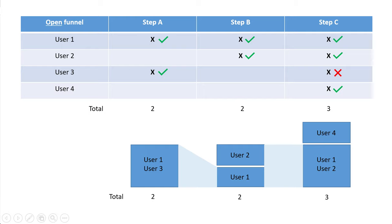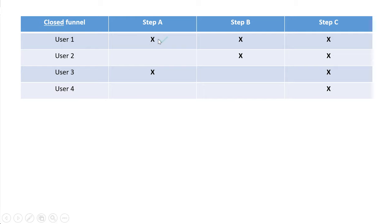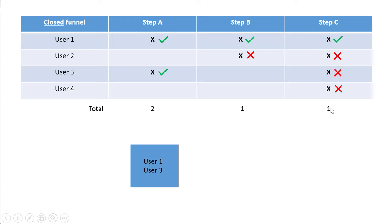Now the same four users in a closed funnel. User 1 is counted in all three steps since they entered at step one and completed everything. User 2 is not included because step one was skipped. User 3: step one is counted, step two is skipped, so step three is also not counted. User 4 is not counted because steps one and two were skipped. In total: two users at step one, one at step two, and one at step three — visually two users at the first step, then drop-off, with only one user advancing.